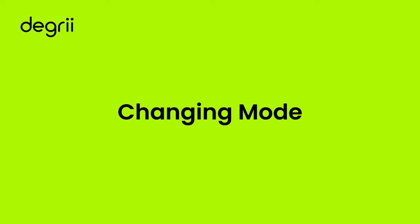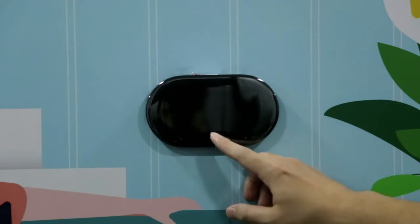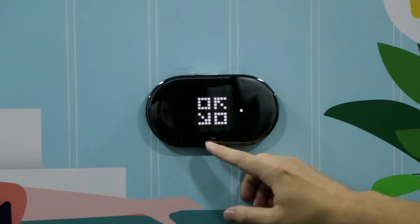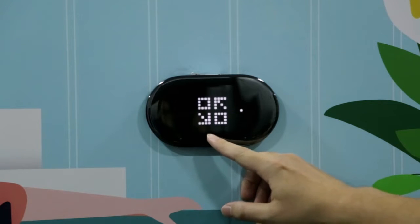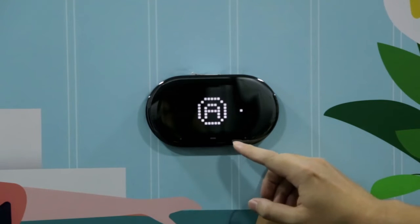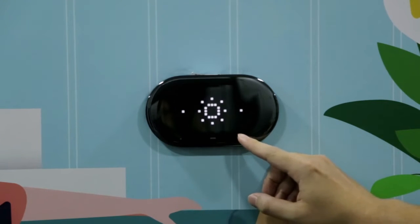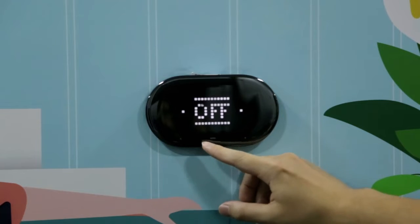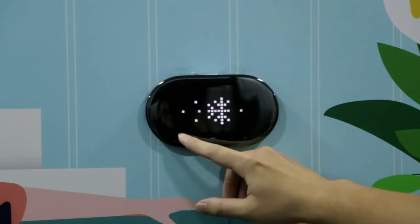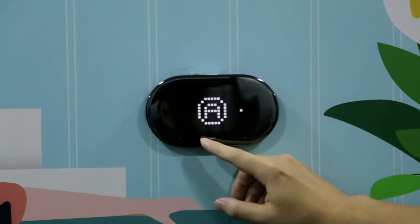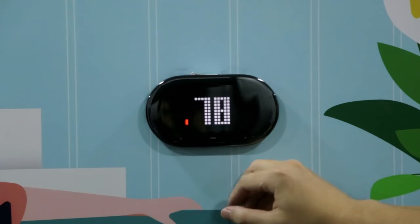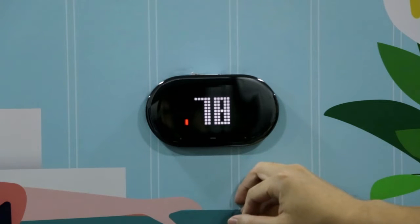First, let's change the mode. Click the middle button twice to access the mode menu. Use the right and left buttons to scroll through the modes: Auto, Heat, Cool, or Off. Confirm your choice by clicking the middle button again.